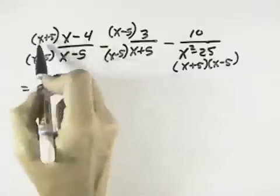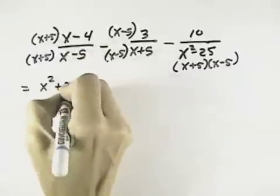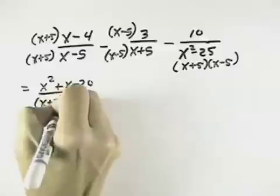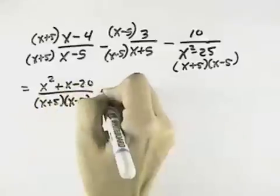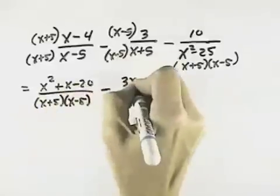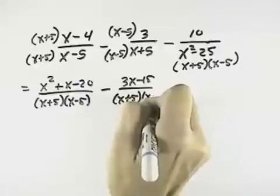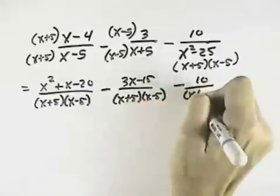In the numerator here, that gives us x squared minus 4x plus 5x is plus x minus 20 over the common denominator. Then we have minus here, we'll have 3x minus 15 over the common denominator. And then we have minus 10 over the common denominator.